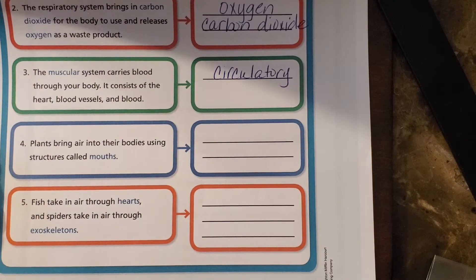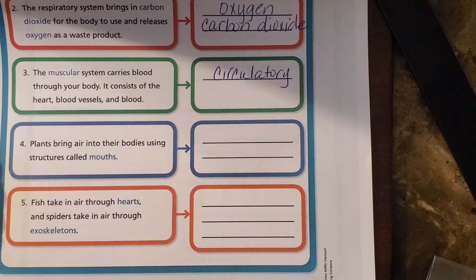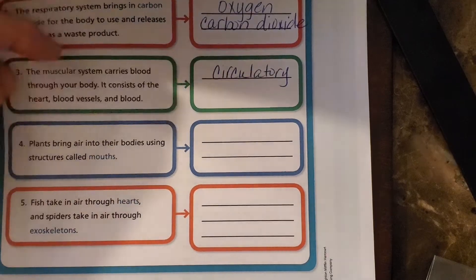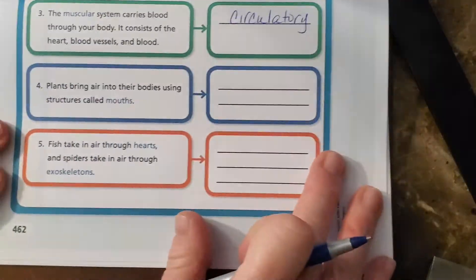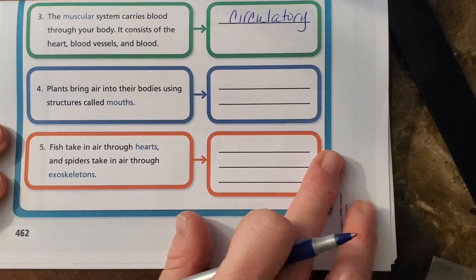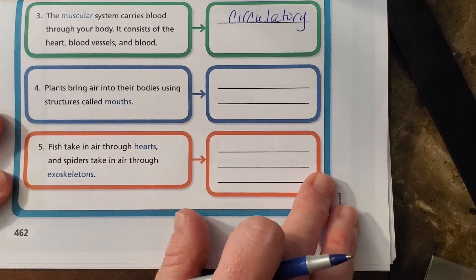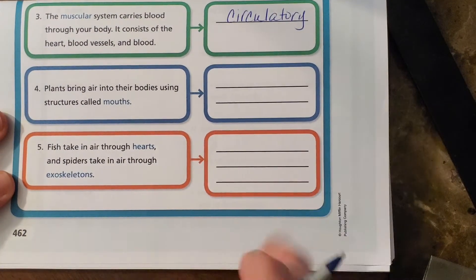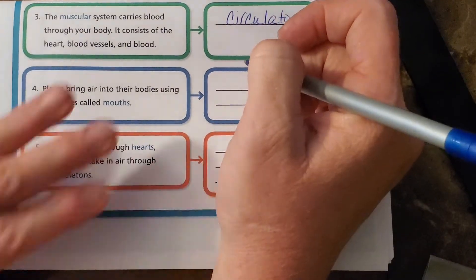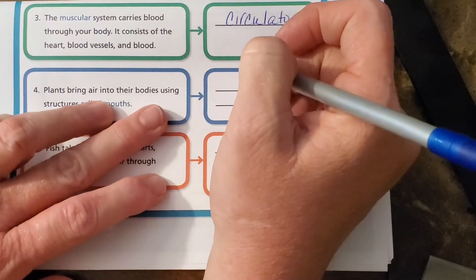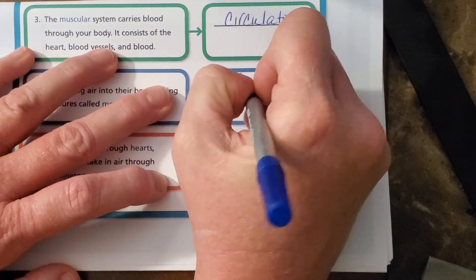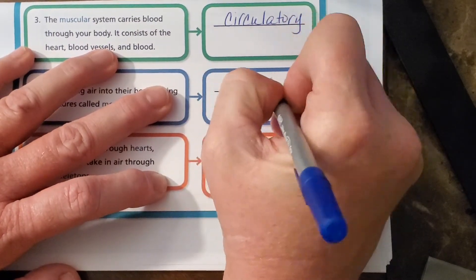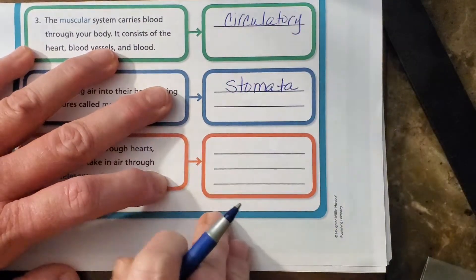Number four: plants bring air into their bodies using structures called mouths. Do plants have mouths? No. Plants don't have mouths — they have stomata. Humans have mouths, but plants don't. They have stomata.